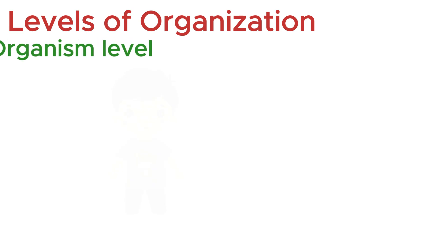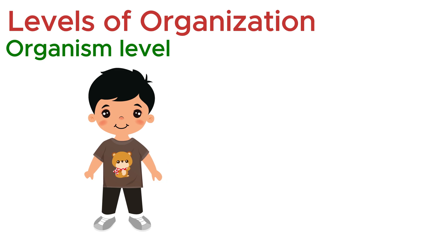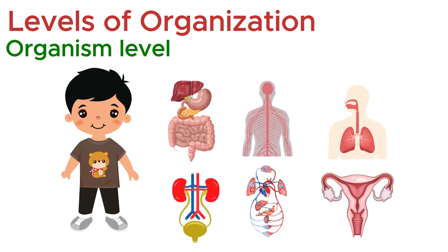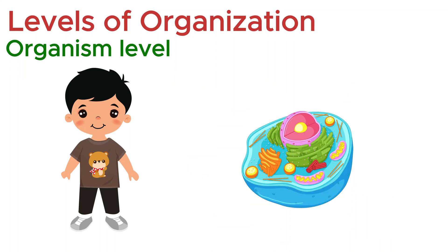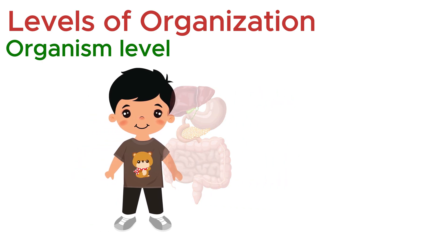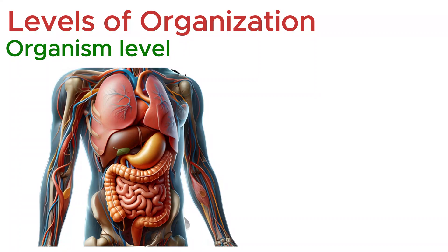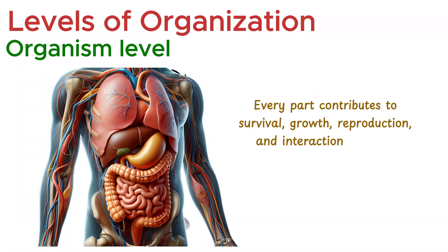The final level of biological organization is the organism — a complete, living individual. At this stage, all the body's systems function together as one coordinated whole. What began as a single cell has developed through tissues, organs, and organ systems, finally becoming a self-sustaining human being. The organism level represents the highest complexity, where every part contributes to survival, growth, reproduction, and interaction with the environment. It is the level at which life truly expresses itself, not as separate parts, but as a unified being.